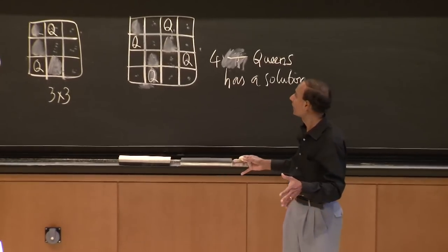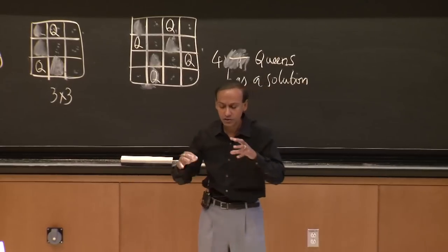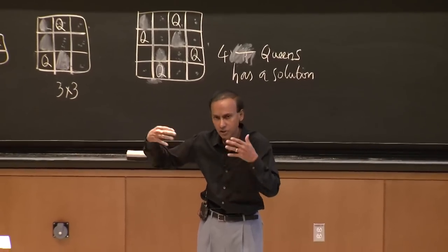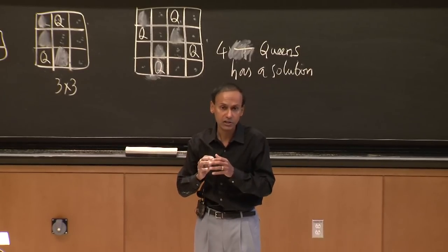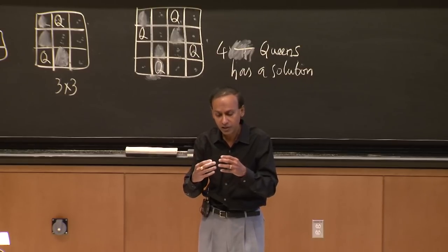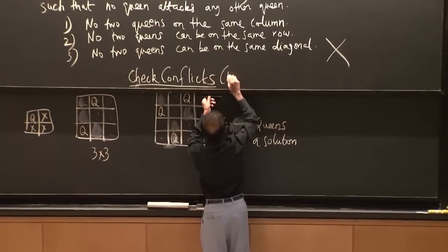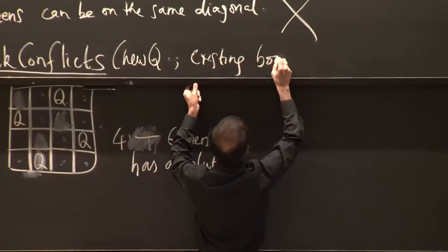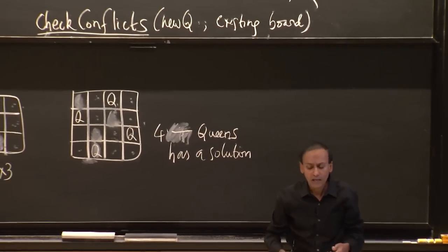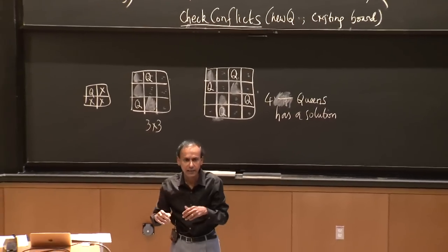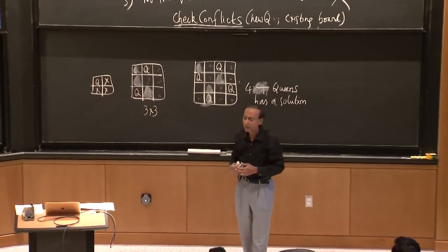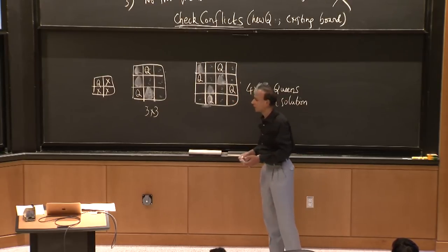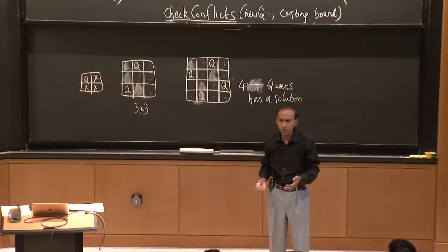There are two ways to set up the conflict checker. You could check all pairs of queens on the entire board every time. But what we did in our search strategy was pass a new queen as the first argument and the existing board as a second argument, checking only the new queen's conflicts with existing queens. That cuts down on computation significantly.